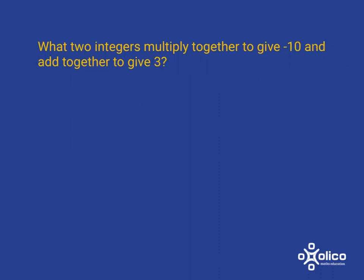One last example. This time we're looking for numbers that multiply together to give negative 10 and add to give 3. In this case the product is negative, so we know we're dealing with either a negative times a positive or a positive times a negative — two different options for this one.